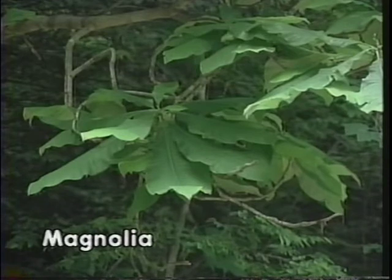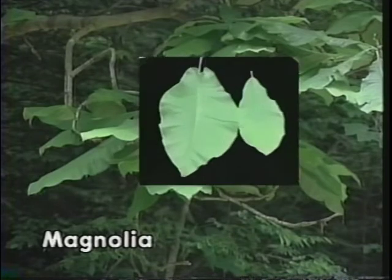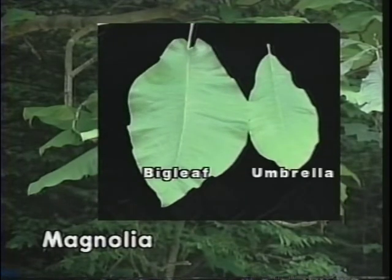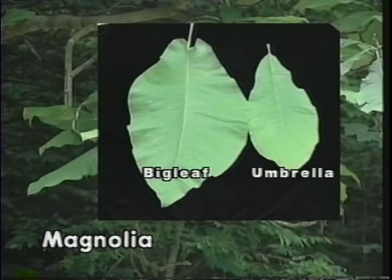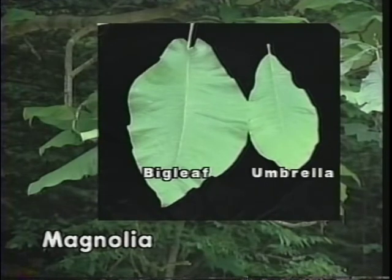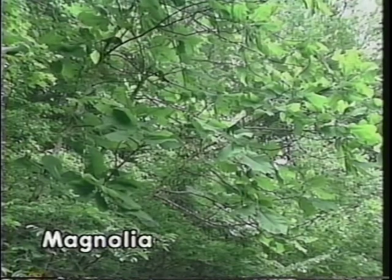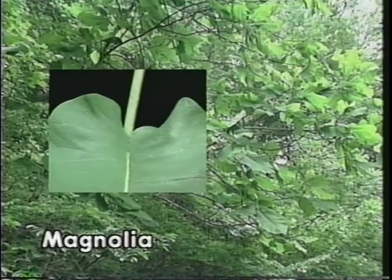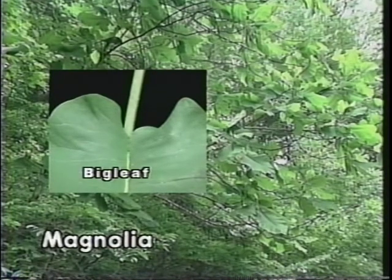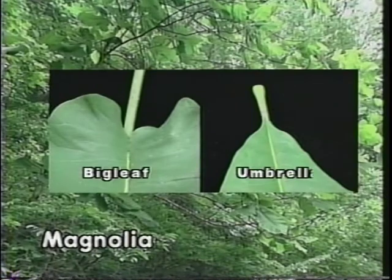Four members of the magnolia family grow in the forests of Kentucky. Two are easily identified by the sheer size of the simple leaf: the big leaf and the umbrella magnolia. Both trees' leaves are alternate in arrangement with entire smooth margins. The big leaf magnolia is between 20 and 30 inches in length, and the umbrella magnolia is 18 to 20 inches. The big leaf magnolia has a base that forms ear lobes, while the umbrella magnolia has a typical acute base — and these identifiable bases separate the two species easily.